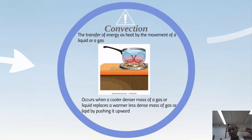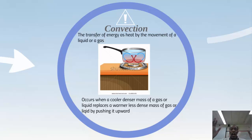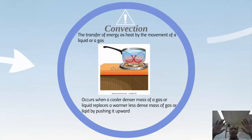In our example, we have a pot of water. Conduction is happening because the pot is touching the flame, allowing the pot to be heated. Then convection occurs because the bottom of the pot is the hottest area — the hot water there is less dense, so the colder water at the top pushes the hotter water up.